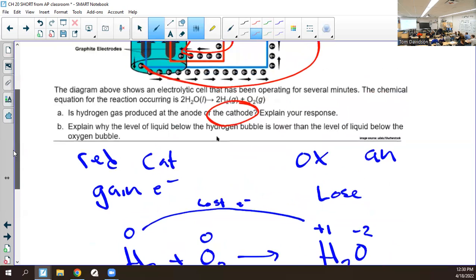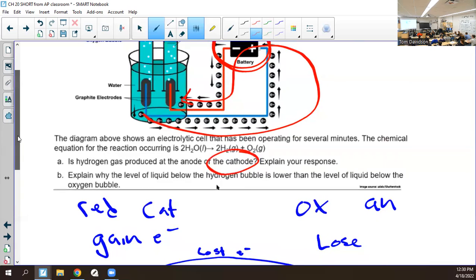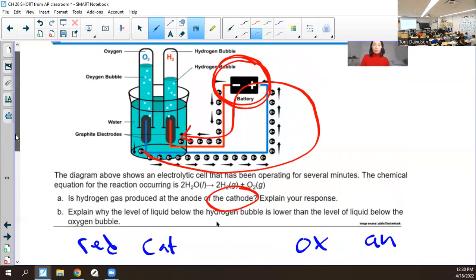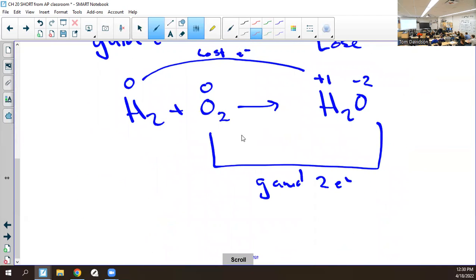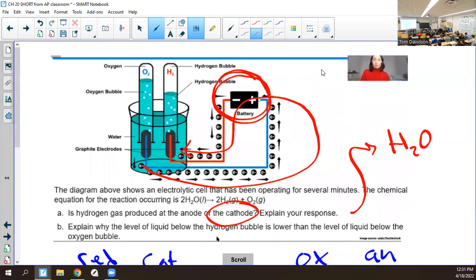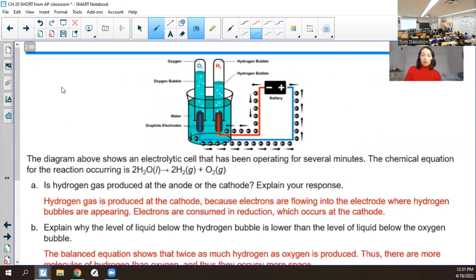Now, Tim, you are right, but we have to be very careful on letter B to explain it a little bit different than we did the first day of school. Explain why the level of liquid below the hydrogen gas is lower than the level of liquid before the oxygen bubble. They don't want you to say because the formula of water is H2O. It's the coefficients. In the balanced chemical reaction, it'd be a two to one mole ratio. You okay with that idea? Thumbs up. We got both those.